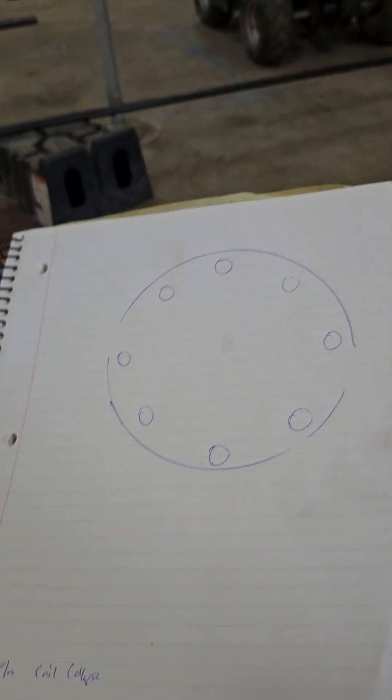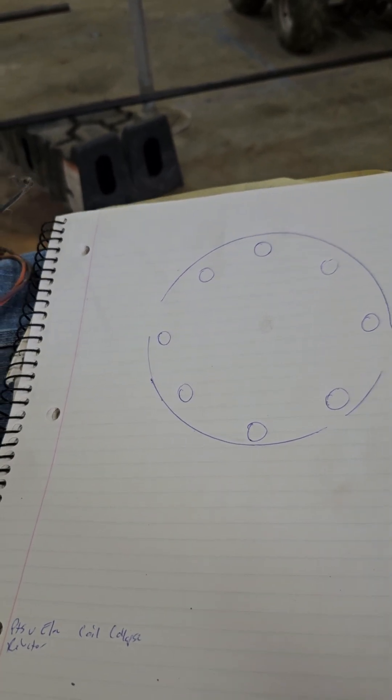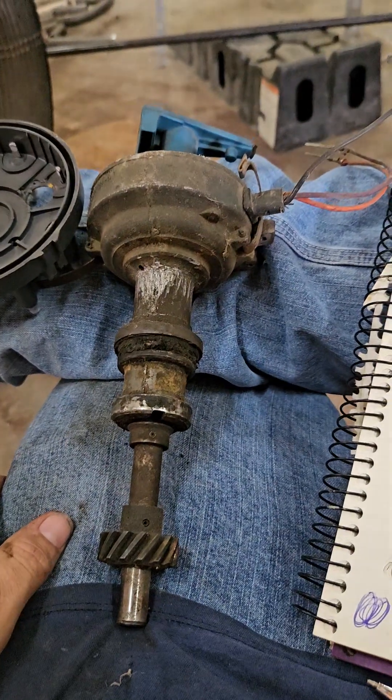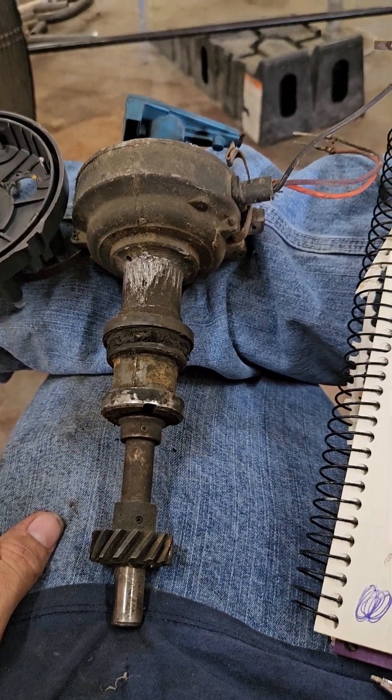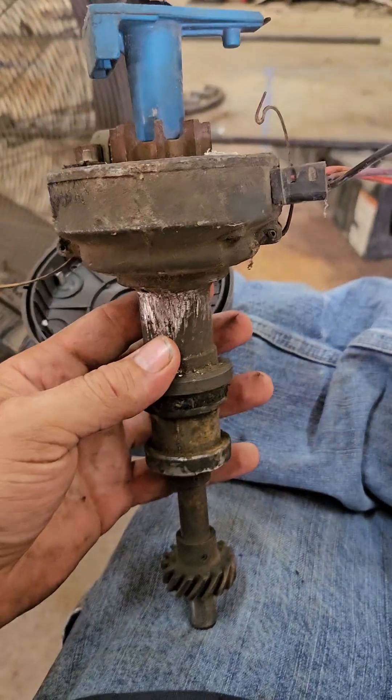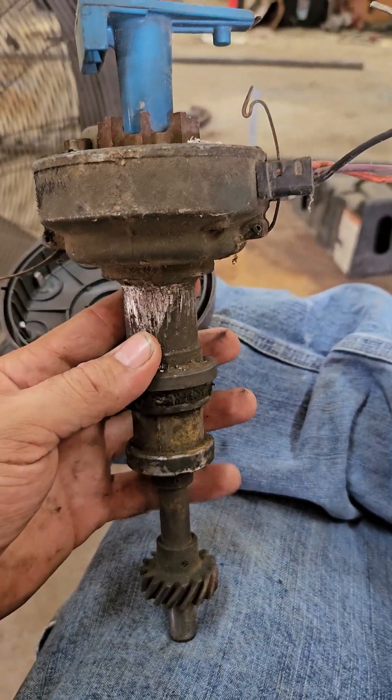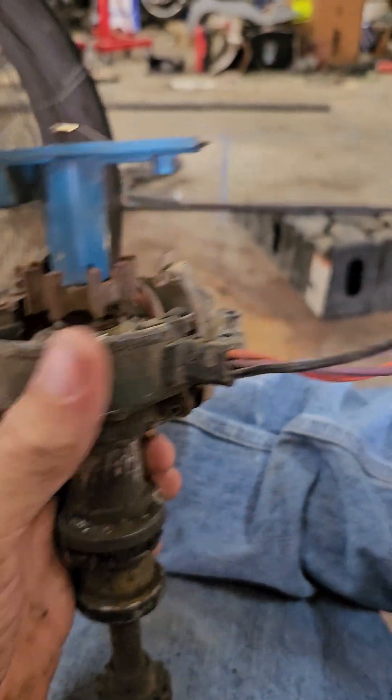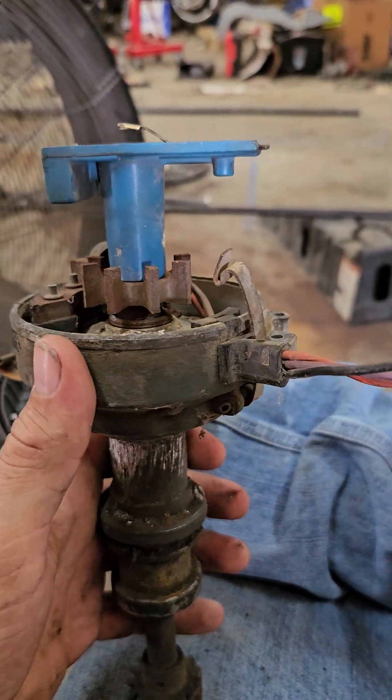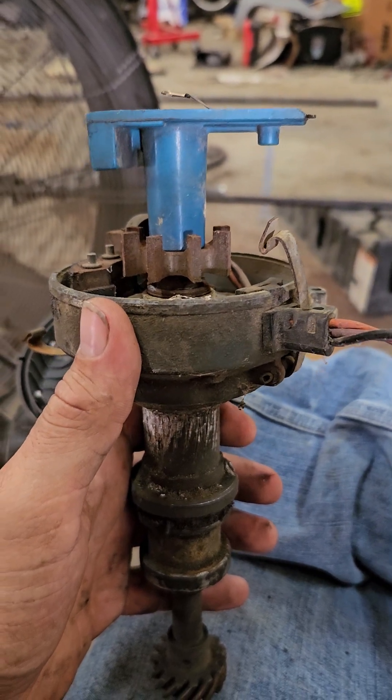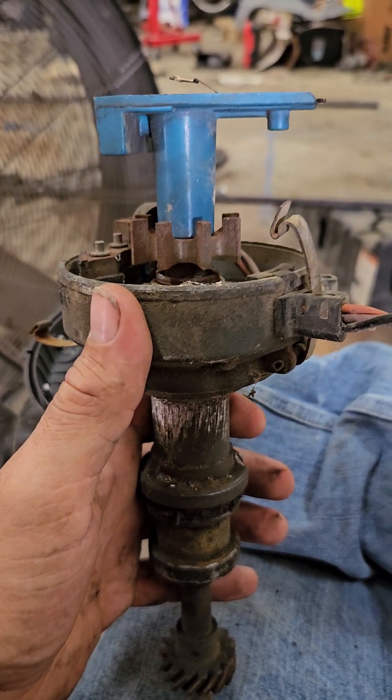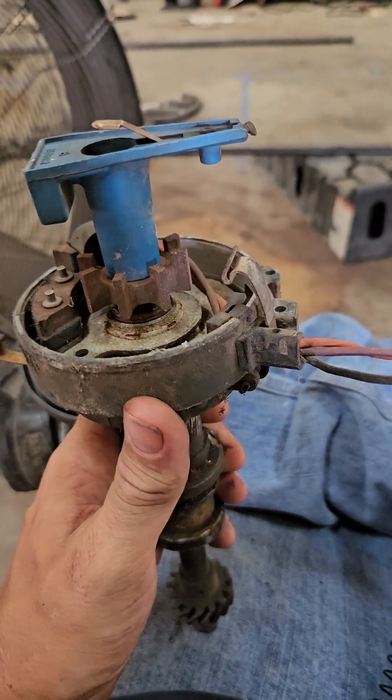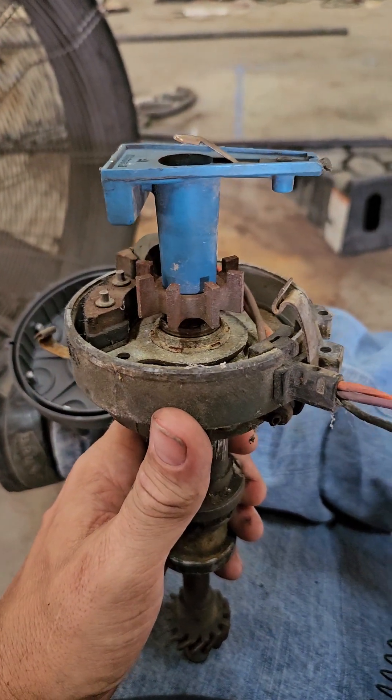I'm going to basically break down—I've got a junk distributor here. Your distributor shaft is made into two pieces: the bottom half and then the top half. This is where your mechanical advance is. The reason it's two different pieces is so the mechanical advance can physically advance the rotor to advance timing based off engine speed.